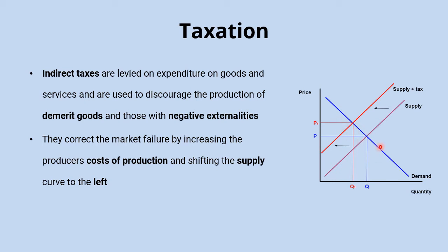It's the supply curve that shifts, and the reason is that it's the producer that pays the tax to the government. When you buy a taxed product, you don't pay the producer one amount and then go to the tax office to pay an additional amount — you pay the producer, and it's the producer who pays the tax to the government. That means their cost of production is higher, which is why the supply curve shifts to the left, taking us to the new equilibrium.